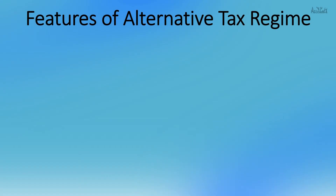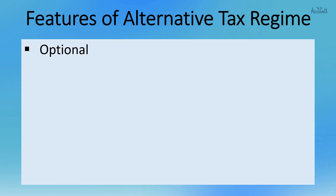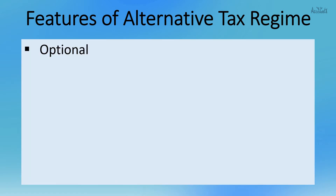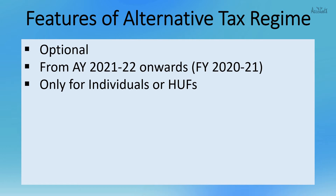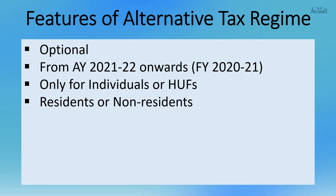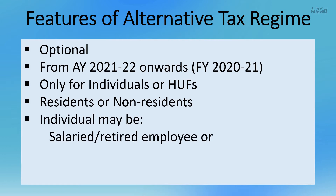The alternative tax regime is optional, introduced from assessment year 2021-22 onwards, i.e., financial year 2020-21. This new regime is applicable only for individuals or HUFs, whether residents or non-residents. The individual may be a salaried or retired employee — pension income is also covered. They may be self-employed, so business or profession income is also covered, or any other person having any other income.